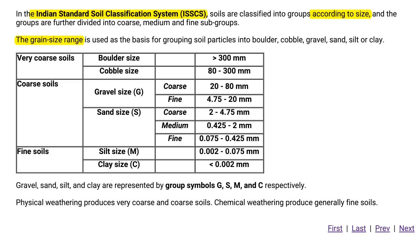Next, we are going to see sand size. Sand size is further classified into three types: coarse sand, with a grain size range of 2 to 4.75 mm; medium sand, with a grain size range of 0.425 to 2 mm; and fine sand, with a grain size range of 0.075 to 0.425 mm. Overall, sand size has a grain size range of 0.075 to 4.75 mm.